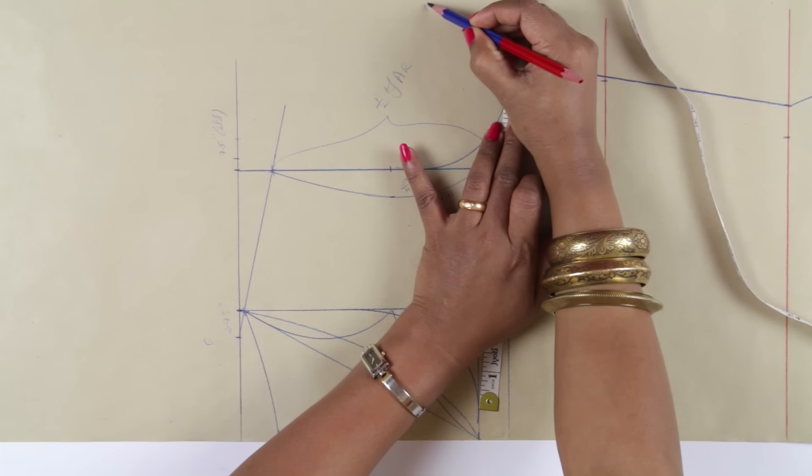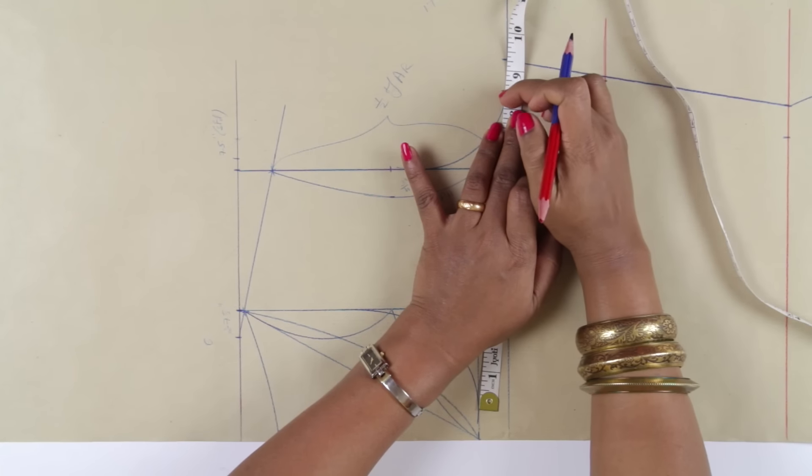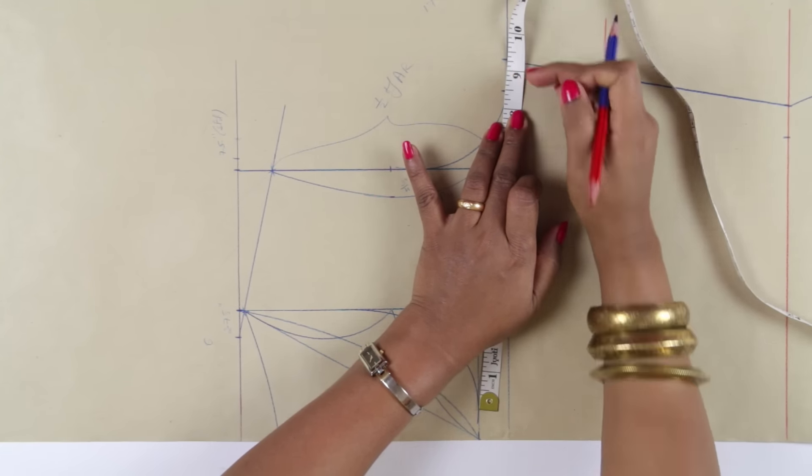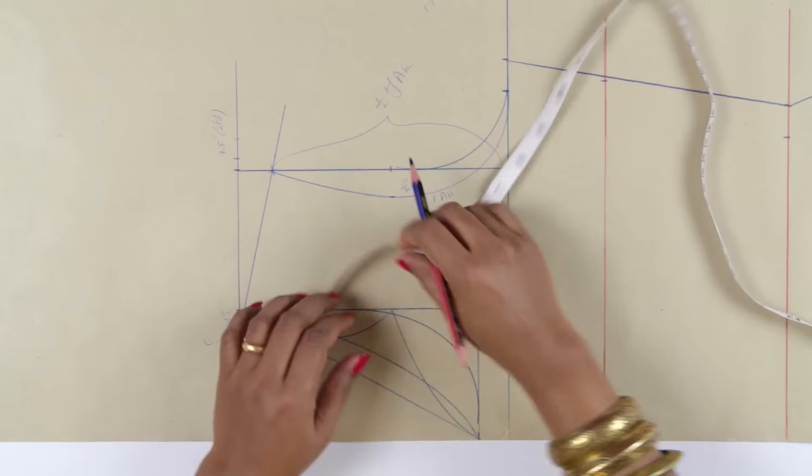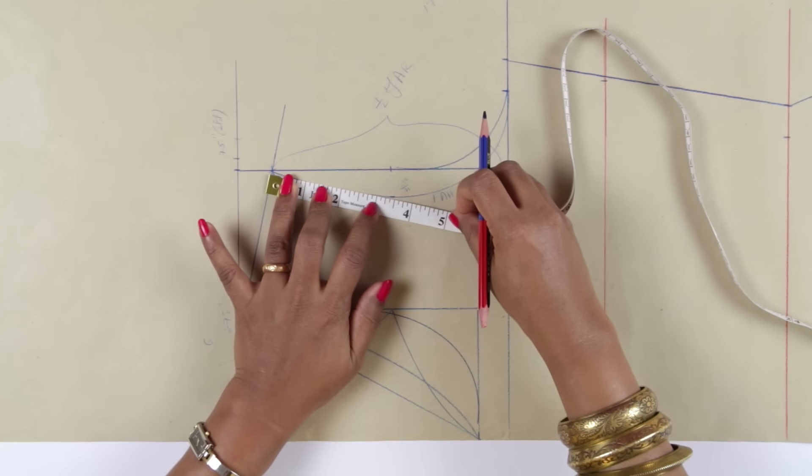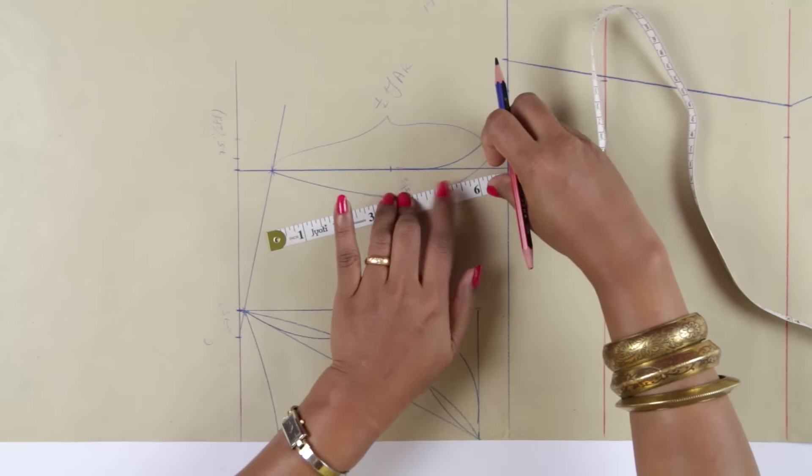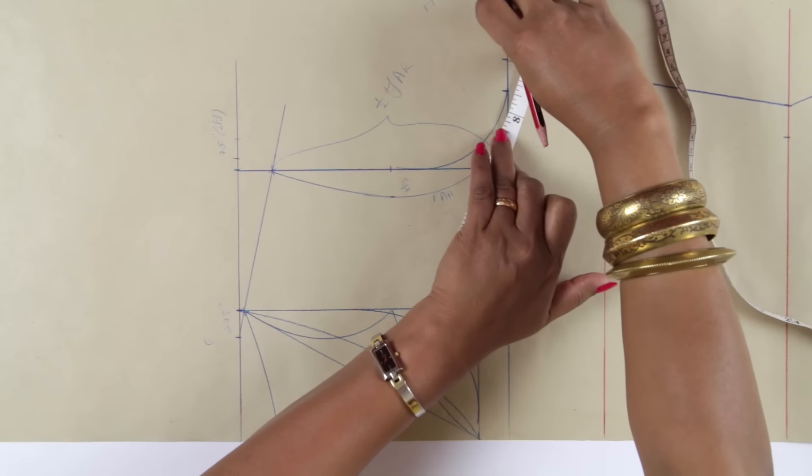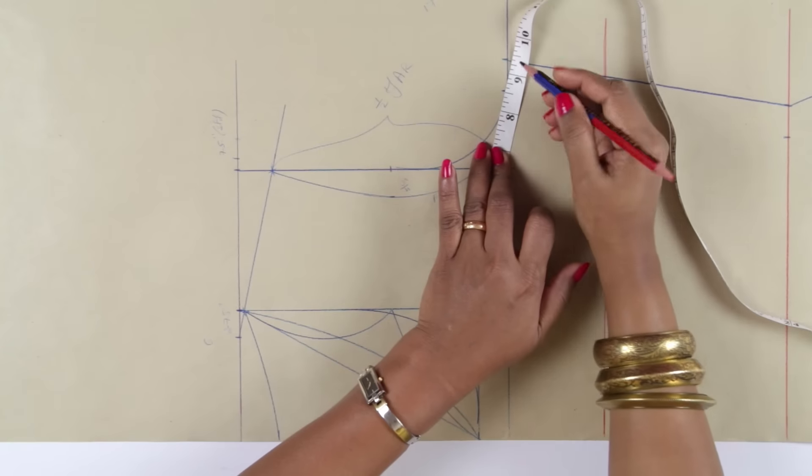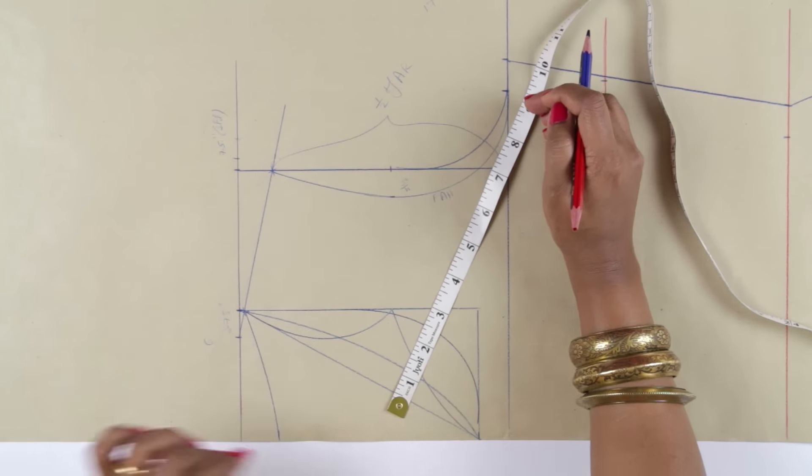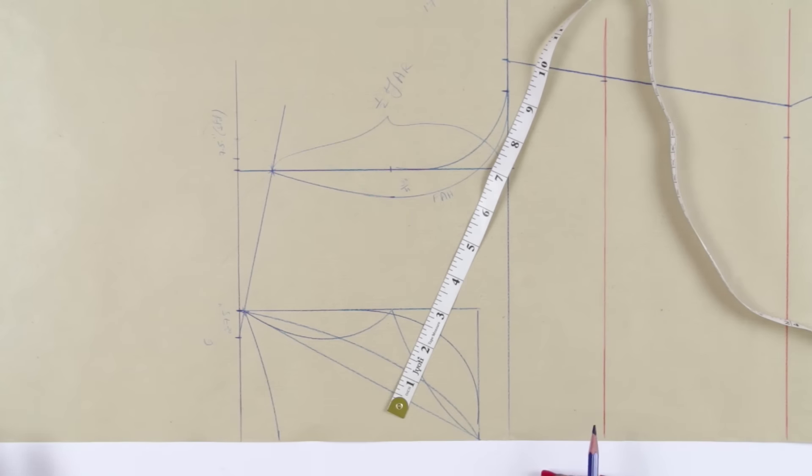Now for example in this, the armhole measurement is 17. So I should be getting 8.5 plus 3.4 inch ease that I have added here. So measure it. So 9.5, that is the measurement. So now this is correct, I am getting the right measurement.